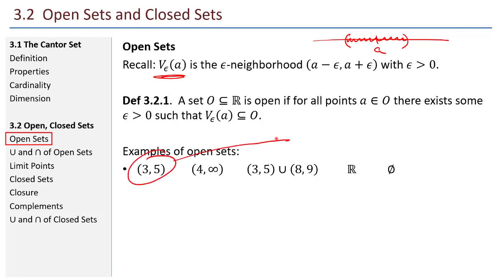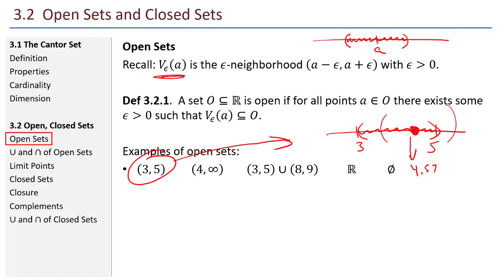For example, this interval from 3 to 5 not including the endpoints. Any number I pick in this set — say 4.57 — I can make epsilon neighborhoods about it. As my epsilon neighborhoods get smaller and smaller, at some point I can make epsilon small enough so that the epsilon neighborhood is entirely contained within the interval from 3 to 5. My set is open if for all points A, there's some epsilon small enough so that the epsilon neighborhood about A is entirely contained in that open set.